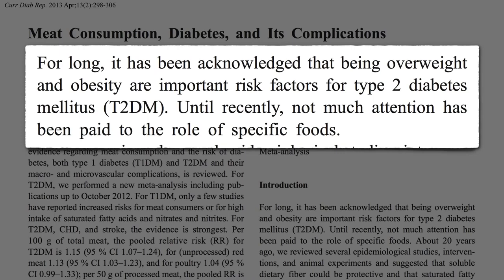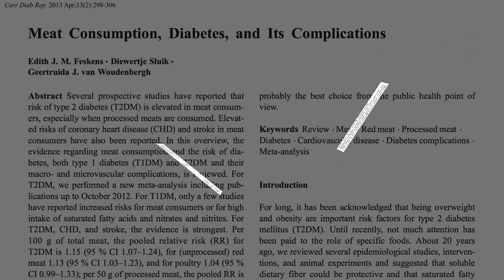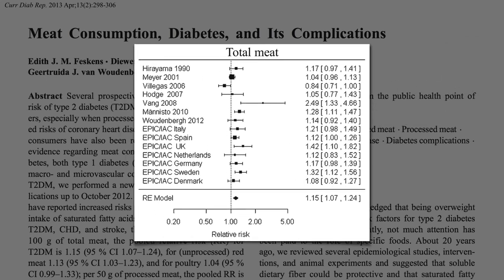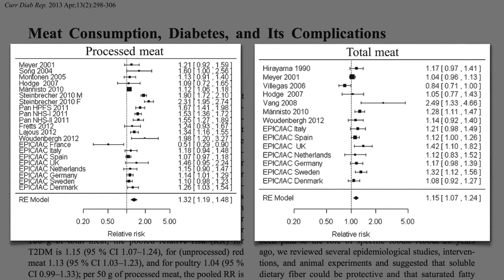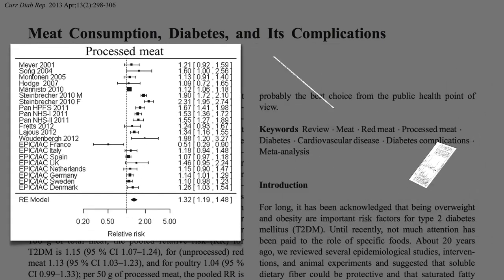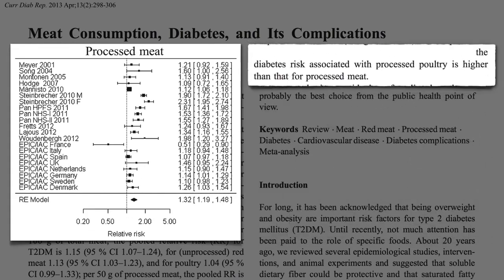This 2013 meta-analysis of all the cohorts looking at meat and diabetes found significantly higher risk associated with total meat consumption, and especially processed meat, particularly poultry. But why?